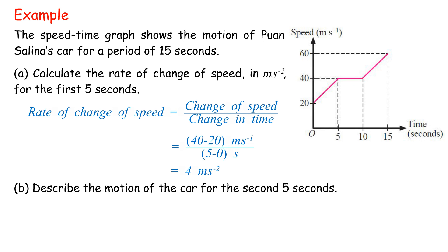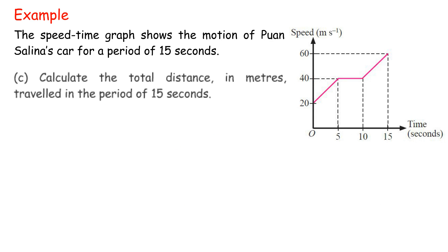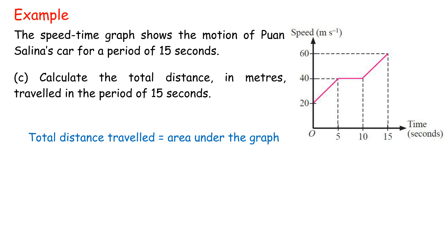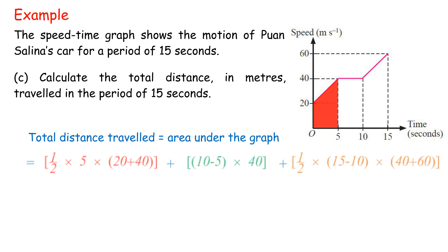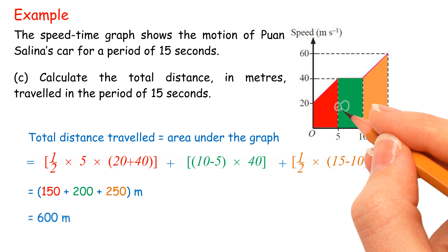B. Describe the motion of the car for the second 5 seconds: the car moves at a uniform speed of 40 m/s for a period of 5 seconds. C. Calculate the total distance in meters traveled in the period of 15 seconds. Total distance equals area under the graph, equals half times 5 times (20 plus 40), plus (10 minus 5) times 40, plus half times (15 minus 10) times (40 plus 60), equals 150 plus 200 plus 250 meters, equals 600 meters.